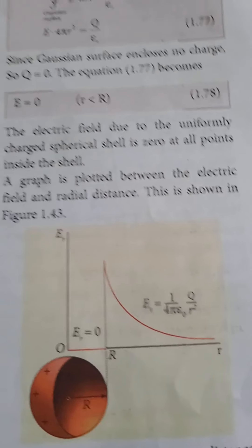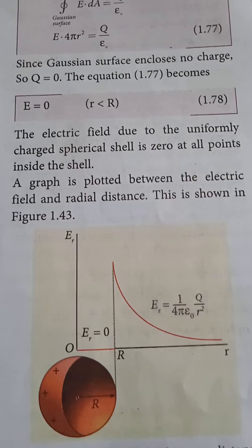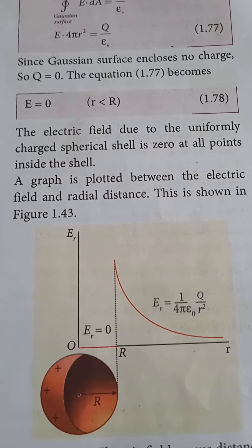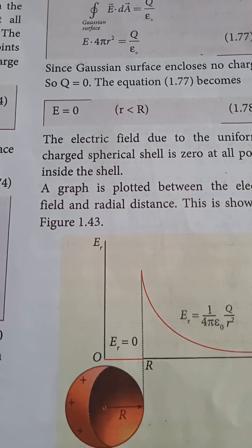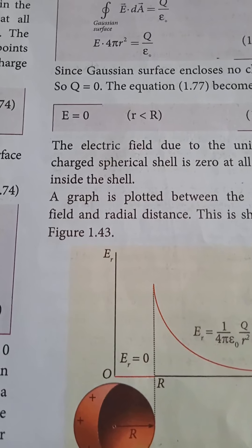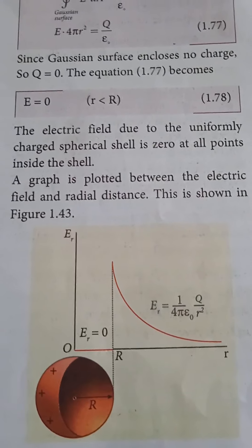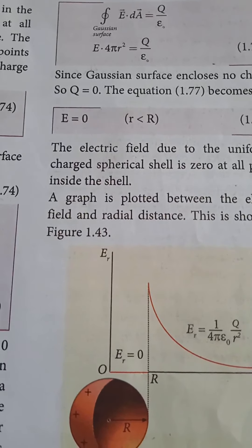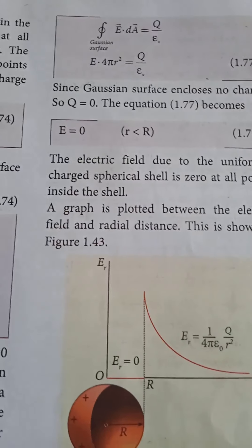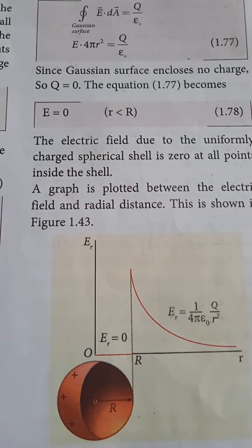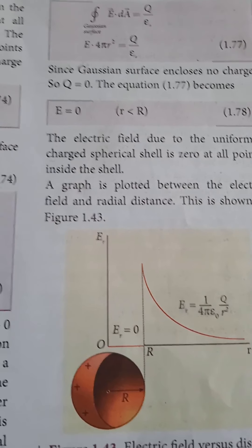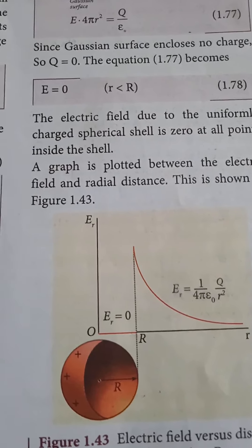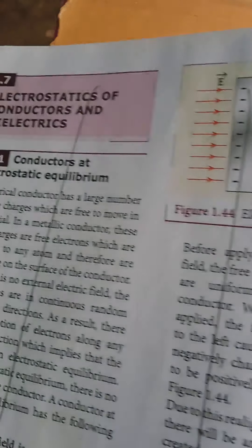The main concept is: the electric field due to a uniformly charged spherical shell is zero at all points inside the shell. So for any point inside the spherical shell, the electric field value is equal to zero.